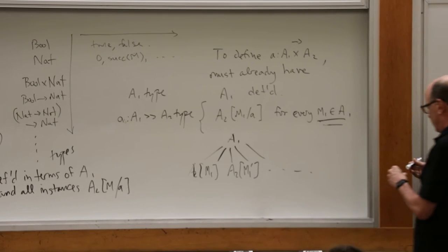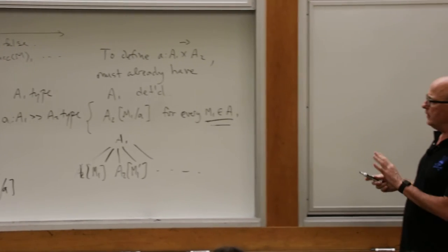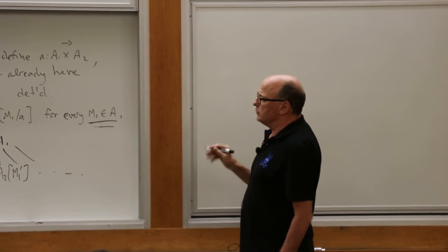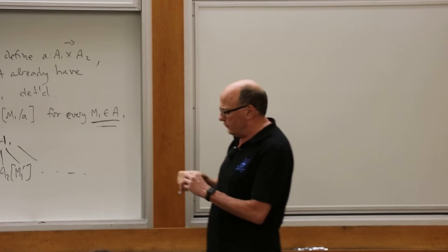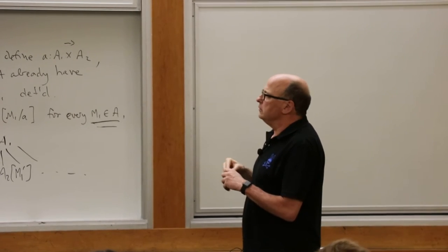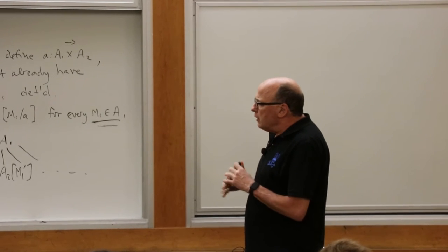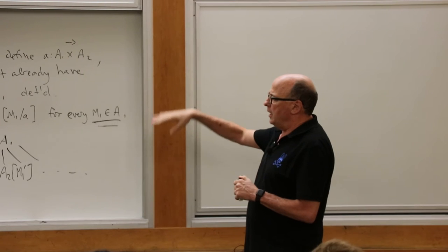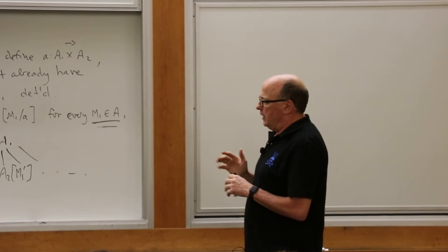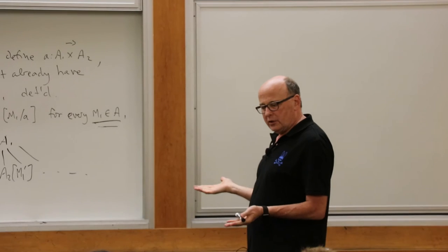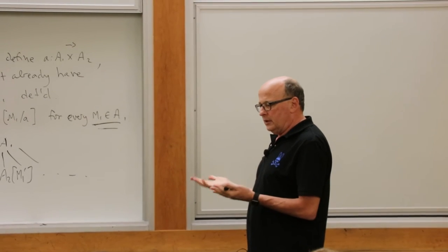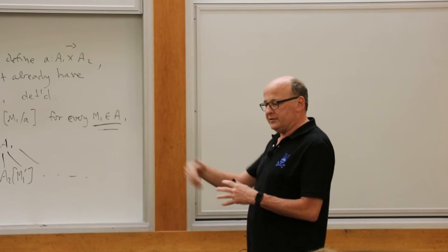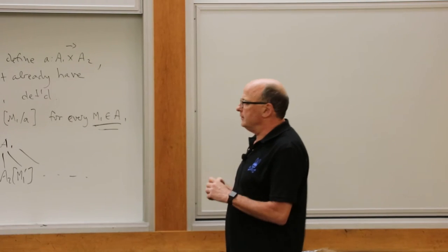The crucial point is that everything is defined in terms of evaluation — it's all defined in terms of program behavior, in terms of how things run. I was making this point yesterday because I wanted to contrast what happens in formal type theory, which is what I'm going to talk about next. I will connect the two and then use that as a transition point.